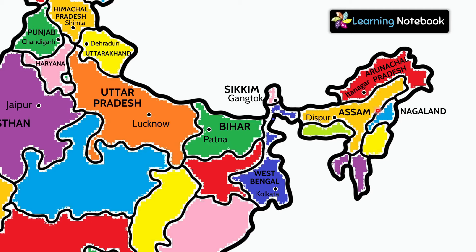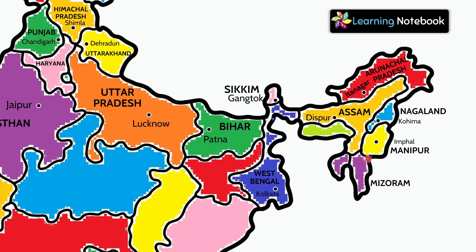This is Nagaland and its capital is Kohima. This one is Manipur and its capital is Imphal. Mizoram and its capital is Aizawl.